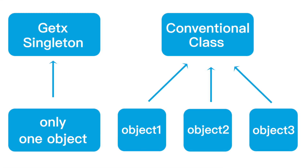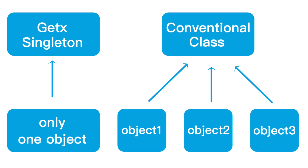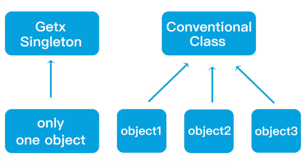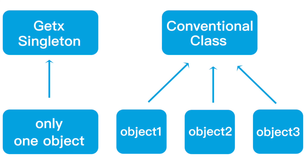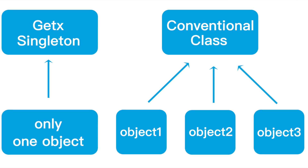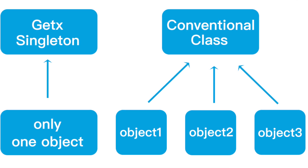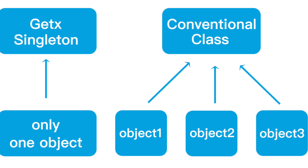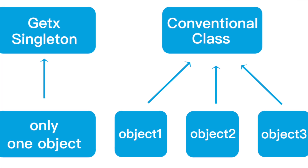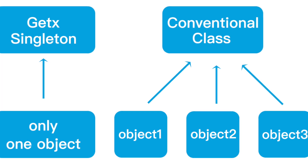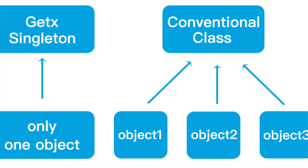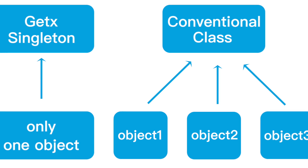It doesn't matter wherever you call this class from — even if you try to create a new object of this class, you'll only have one instance. That means it will only get initialized once and will only occupy one place in memory. Let's go ahead and get started.